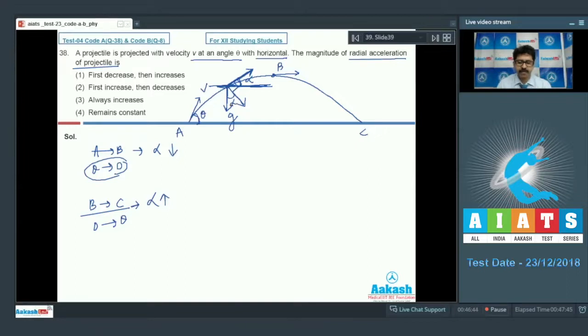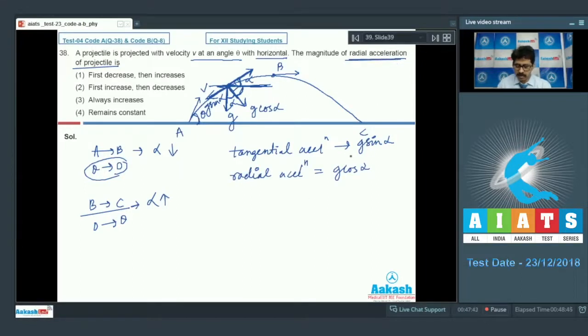As you can see, from ground to highest point, theta to 0, alpha decreases. And from B to C, when it goes, 0 to theta, alpha is increasing. And here instantaneous velocity is tangent to the path. And acceleration due to gravity is vertically downward for the projectile. So this is the horizontal direction. g's normal component to the velocity. So if this angle is alpha, because these two angles are 90 degrees and these two are also 90 degrees. So if this angle is alpha, then this angle is alpha.